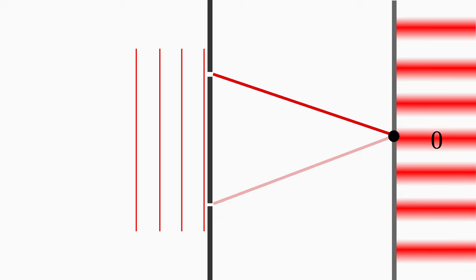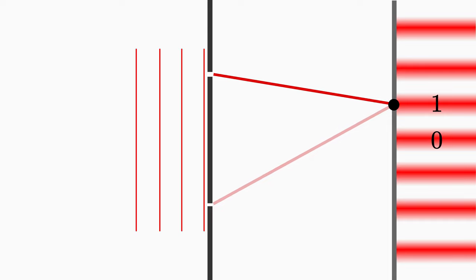If you go up a little bit from the middle, the wave from the lower slit has to travel a longer distance to the screen than the wave from the upper slit. The waves going to the first bright fringe must have a path difference that corresponds exactly to one wavelength.